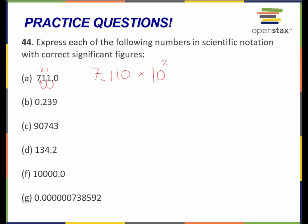Let's do the next one. I have to move the decimal point in between the first two non-zero numbers, so that's going to give me 2.39. I don't include that first zero because that's a leading zero and it's not significant. I can't ignore the fact that this number was 0.239, and the way that I capture that information — that this is a number smaller than one — is my multiplication factor. Now that I'm moving the decimal to the right, it has to be a negative number. I moved it to the right one space, so it's negative 1.